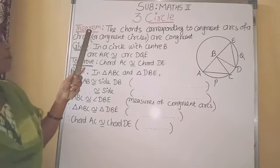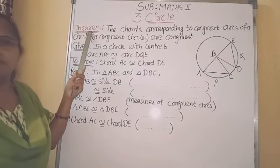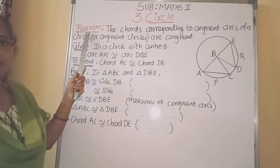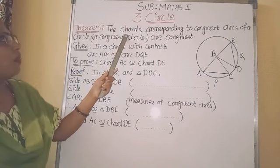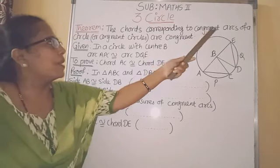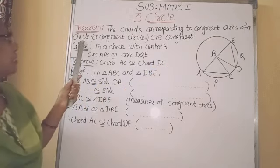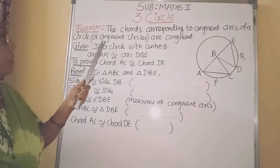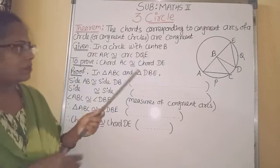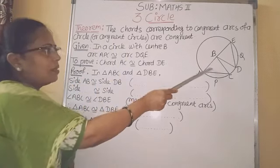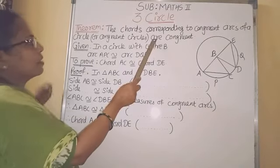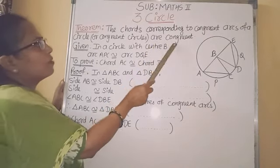We will prove the next theorem. The statement of the theorem is: the chords corresponding to congruent arcs of a circle, or of congruent circles, are congruent.